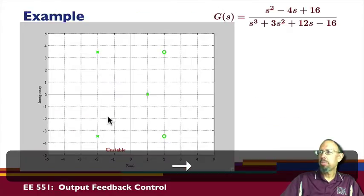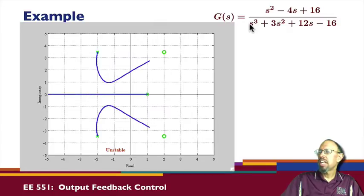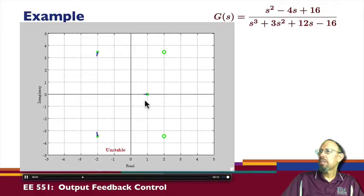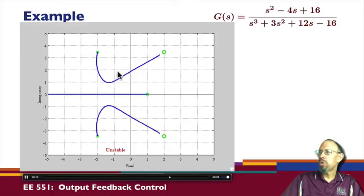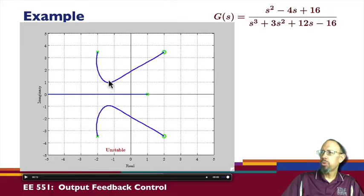Let's look at an example. Here I have a system with this transfer function, and this is the root locus showing how as k varies the poles migrate. So here we have the poles migrating — this pole was unstable, it went stable, and now these poles have gone unstable. In a root locus situation, that's the kind of thing that can happen. There's a range of k in which a pole is in the left half plane, but if you continue to increase k they eventually cross over into the right half plane.